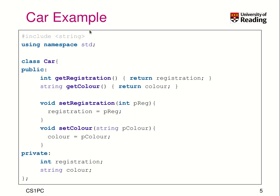In the car example, we looked at the code in C++ only. We have a class car with a public interface implementing methods for getRegistration, getColor, setRegistration, and setColor. Those functions directly access the private data members, which are of type integer: registration and color. Using those functions, you can access those data members. But these are very simplistic functions that just kind of pass through the data.